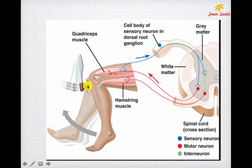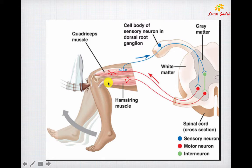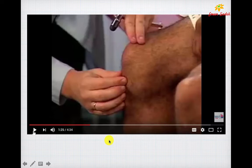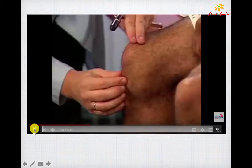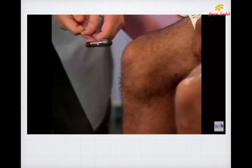The knee reflex involves tapping the tendon below the patella, causing afferent impulses from the posterior root cells to pass to the anterior horn cell, causing contraction of the quadriceps femoris and forward movement of the limb. Due to loss of proprioceptive fibers in the lumbosacral region, this reflex is lost in tabes dorsalis, as is the ankle reflex.